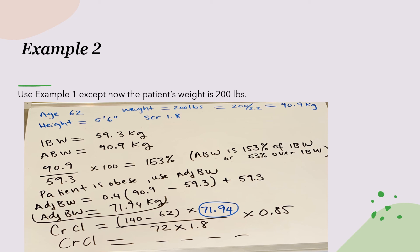To recap: it's the same Cockcroft-Gault equation throughout — for females, remember to multiply by 0.85. The key difference is which weight you use. In most cases, use ideal body weight. If the patient is obese — meaning actual body weight is greater than 30% over ideal body weight — calculate and use the adjusted body weight. If the actual body weight is less than ideal body weight, use the actual body weight. That's it for today — see you all in the next one!